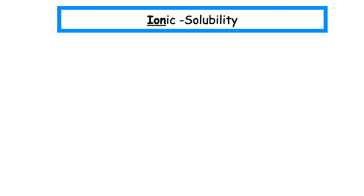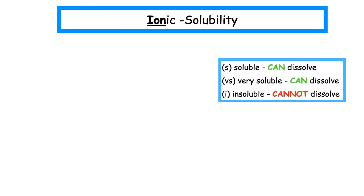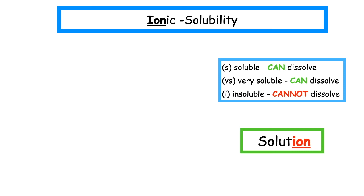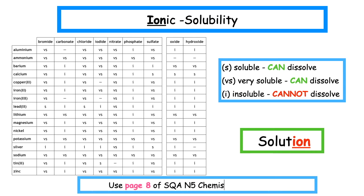Ionic substances are more commonly known as salts. Some salts can be soluble, some are very soluble, and some are insoluble. If they do dissolve, they create a solution. The word solution ends in ion, which means the particles found in a solution are known as ions. You have to use page 8 of the SQA National 5 Chemistry Data booklet to identify whether a salt is soluble, very soluble, or insoluble.